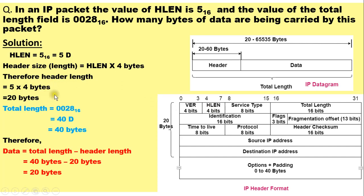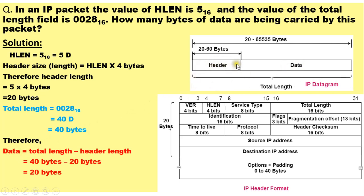The header length is 5 multiplied by 4 bytes, which equals 20 bytes — the fixed size of the IPv4 header. So in this case there are no options in the IPv4 header. The total length field value given is 0028 in hexadecimal, which converts to 40 in decimal, meaning 40 bytes. We can now calculate the data bytes: data equals total length minus header length.